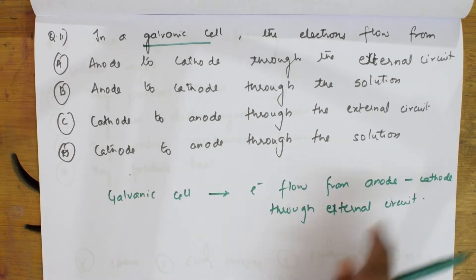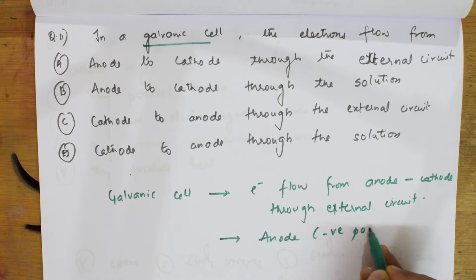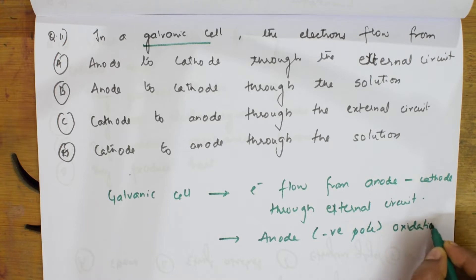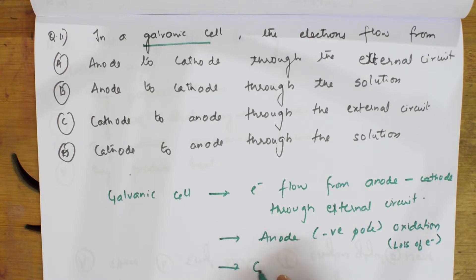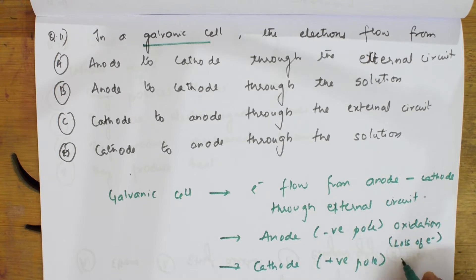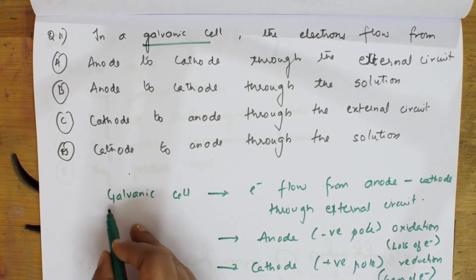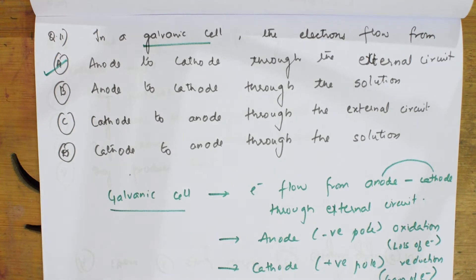Basically, here electrons flow from anode to cathode. What is this? Anode is a negative pole. Oxidation happens at anode — that is loss of electrons. That is why electrons flow from anode. They go to cathode. What is the charge there? Cathode is a positive pole. Reduction will happen here. Reduction is nothing but gain of electrons. So always remember, in a galvanic cell, electrons flow from anode to cathode. The correct option is anode to cathode through the external circuit.